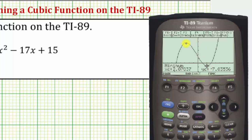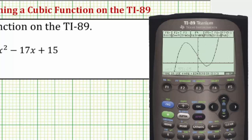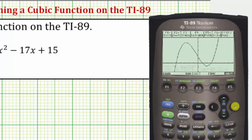Let's also determine the relative maximum. We'll press F5, option four for maximum. Lower bound means move the cursor to the left of the relative maximum, so we'll press the left arrow, then press enter. Upper bound means to the right side of the relative maximum — let's say here — press enter. And we see the approximate coordinates of this relative maximum. Let's go ahead and press escape.